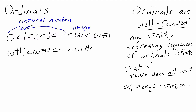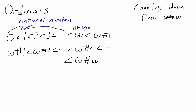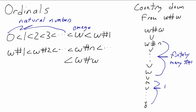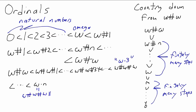You might have guessed that the ordinals just keep going. Larger than any of the numbers omega plus n is the number omega plus omega. When a timer has the value omega plus omega, that means we don't know how many steps are left, and we don't even know when we'll know. But at the next step the timer will decrease, maybe to a finite number, but maybe to omega plus n for some n. We might as well jump from there to omega times omega, which we'll usually call omega squared.